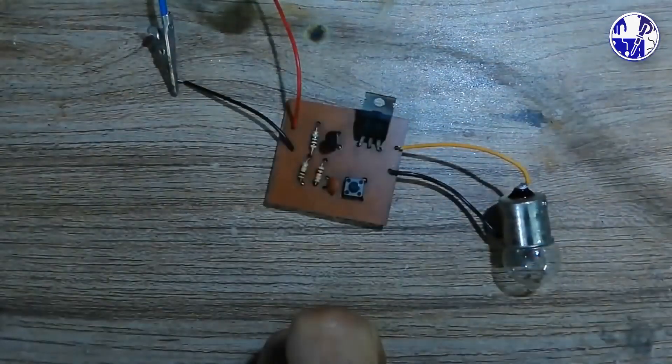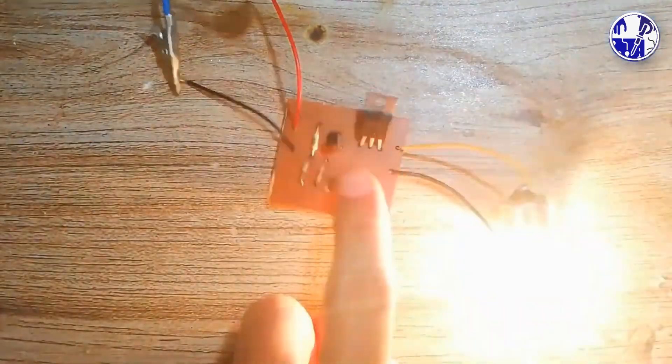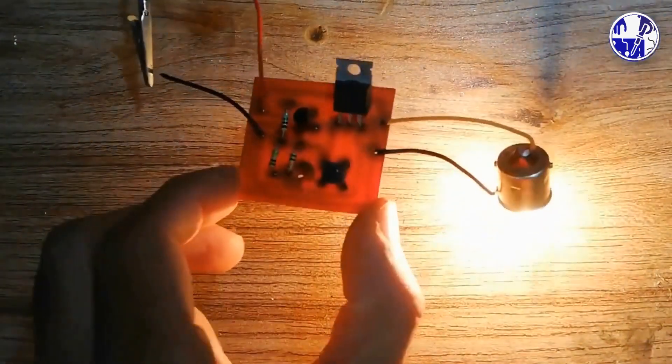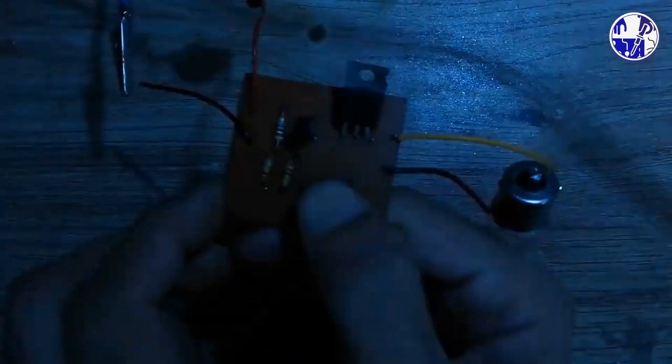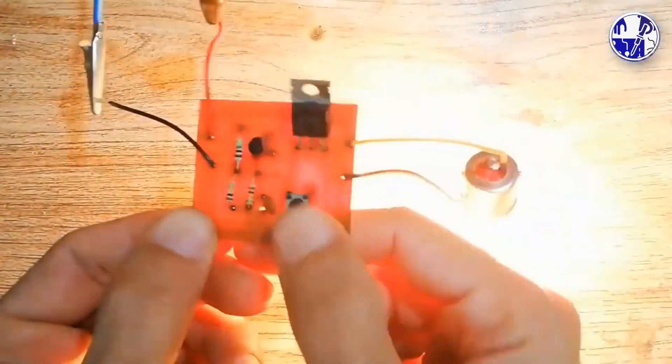In the off-state, the circuit draws no current since both transistors are closed. This makes it ideal for battery-powered applications, providing simplicity and efficiency.